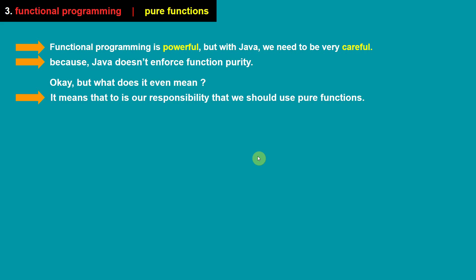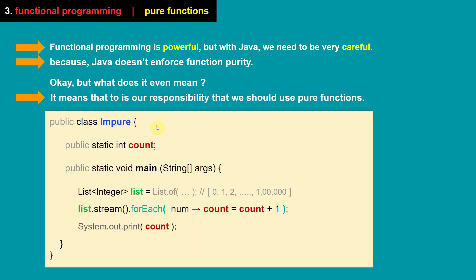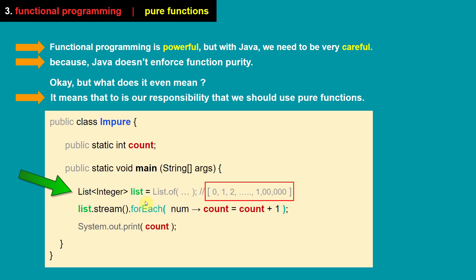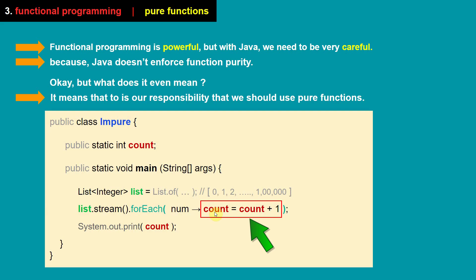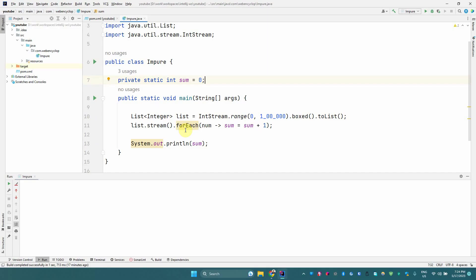Let's consider an example. Suppose we have a class with a static variable count, and a list of integers containing integers from 0 to 1 lakh. We stream each element and for each element we simply increment the count value by 1. Since there are 1 lakh elements in the list, the count value would be 1 lakh at the end, and we print it.